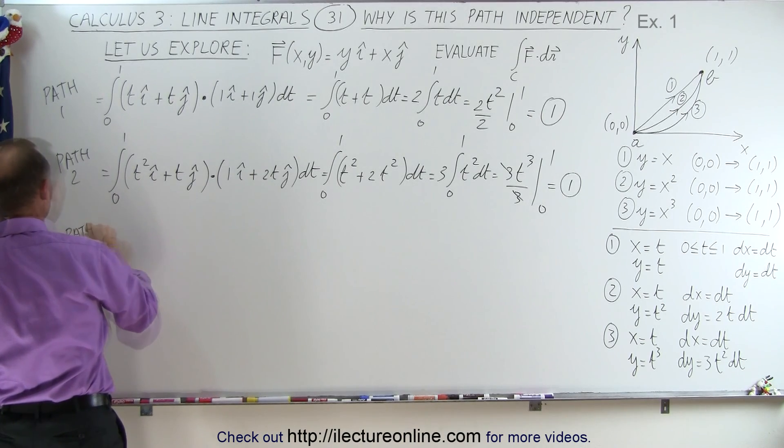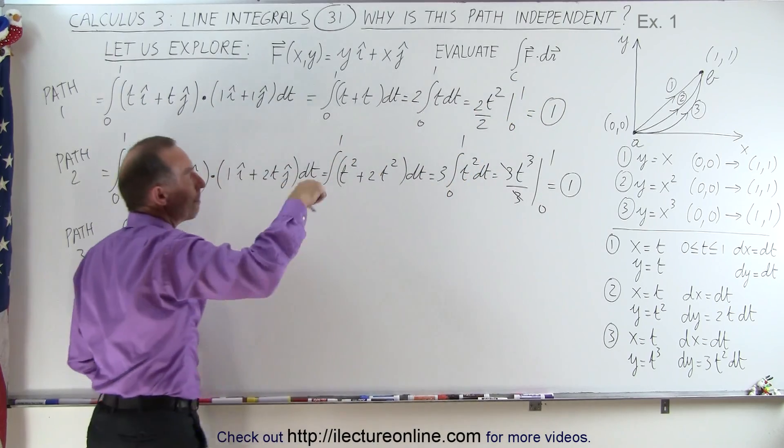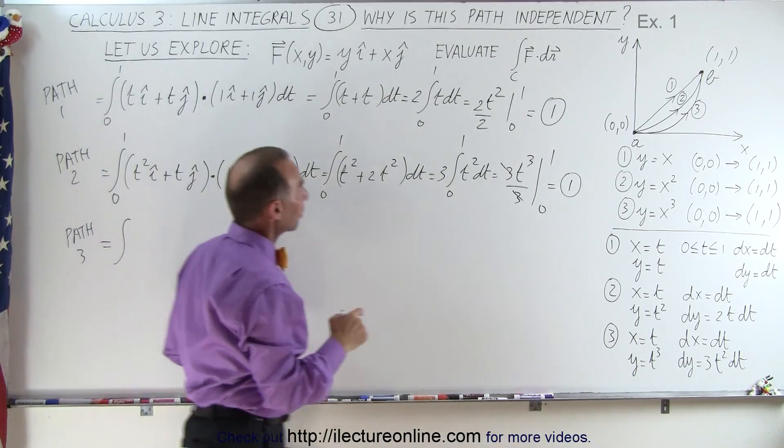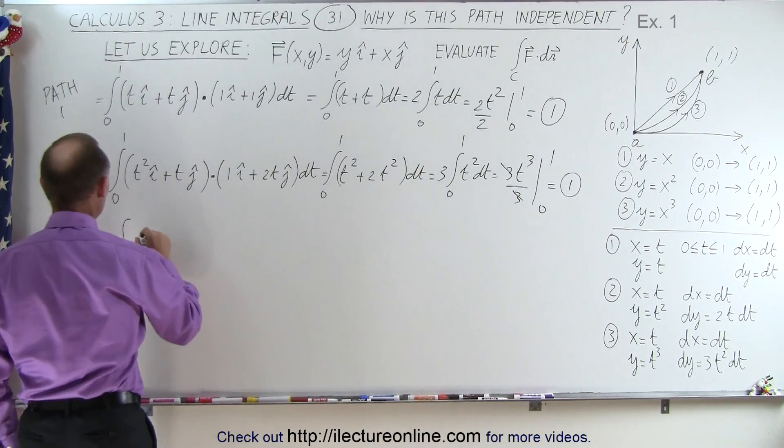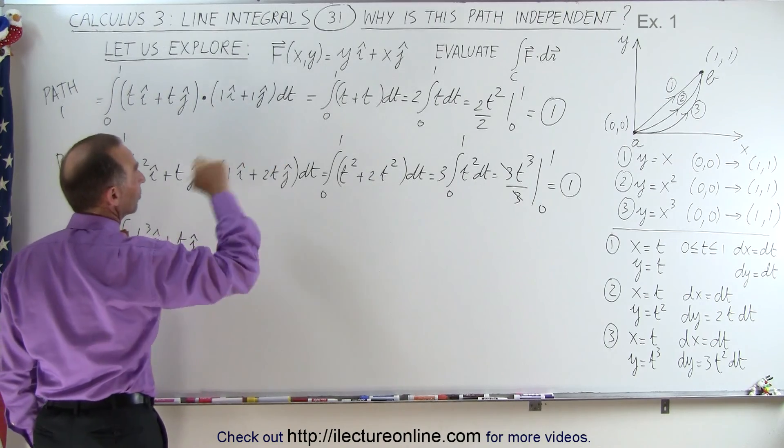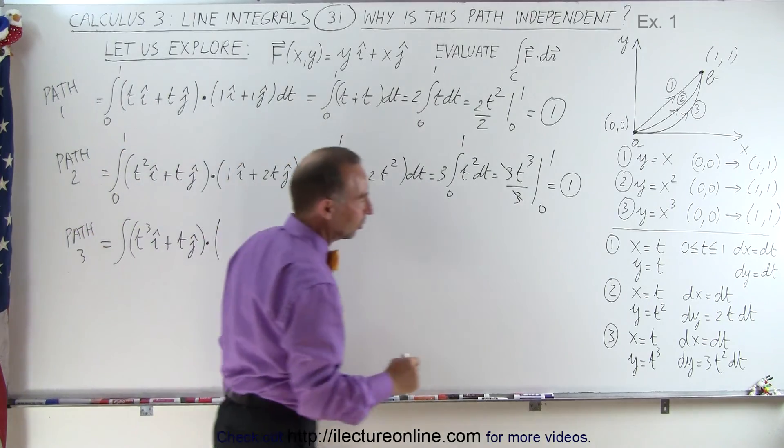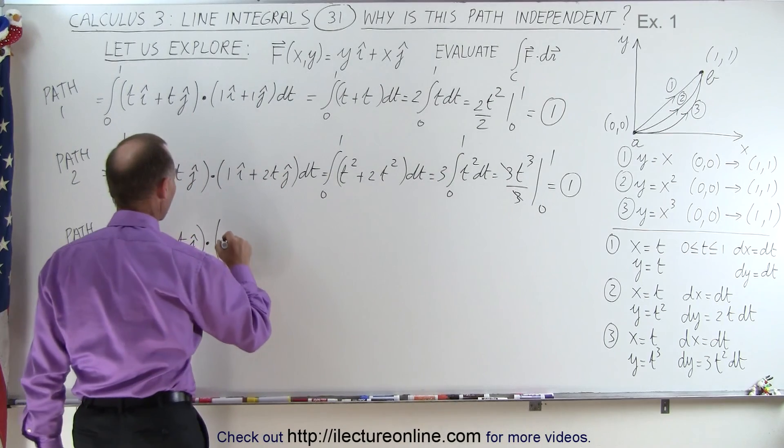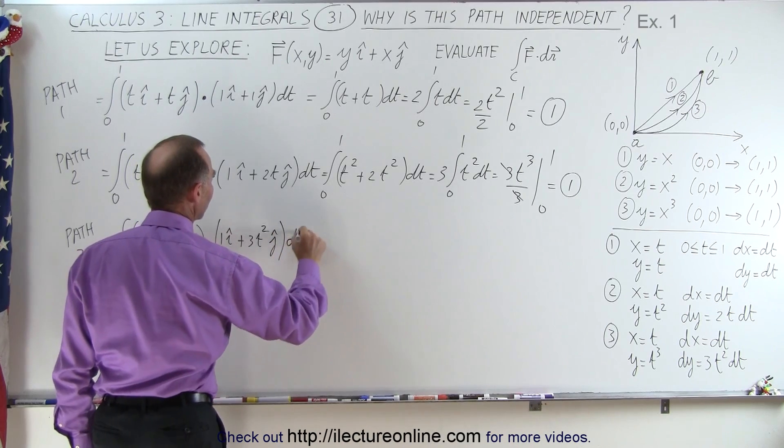So now we're going to take path 3 and the integral of f dot dr over the path that we take is going to be, f is going to be y in the i direction, but in this case y is going to be t cubed using the parametric equations. And so this is going to be t cubed in the i direction plus t in the j direction because x is still equal to t. And we have the dot product with dr. Now notice for dx we have dt, for dy we have 3t squared. So this becomes 1 times i plus 3t squared in the j direction times dt.